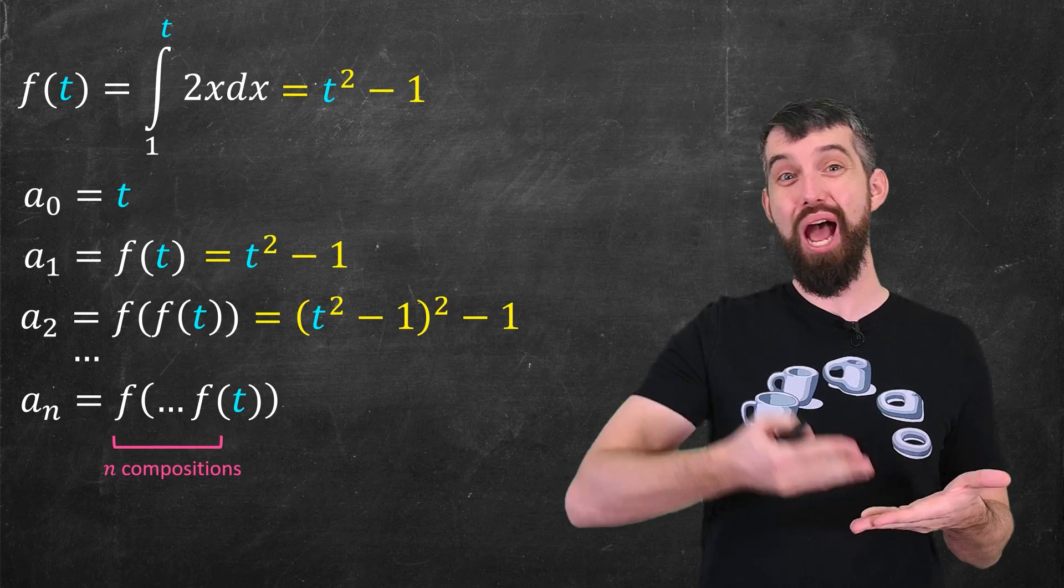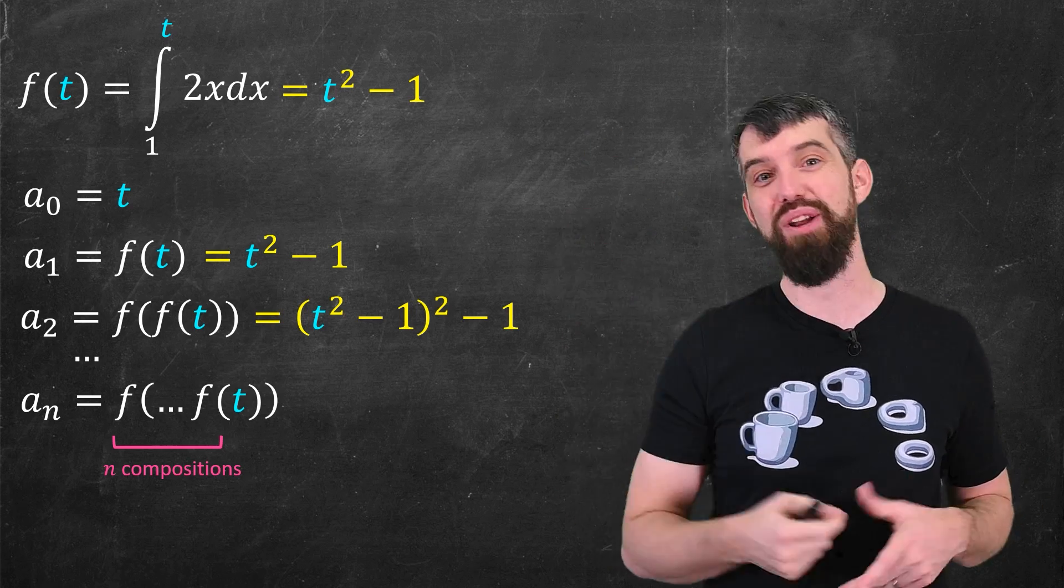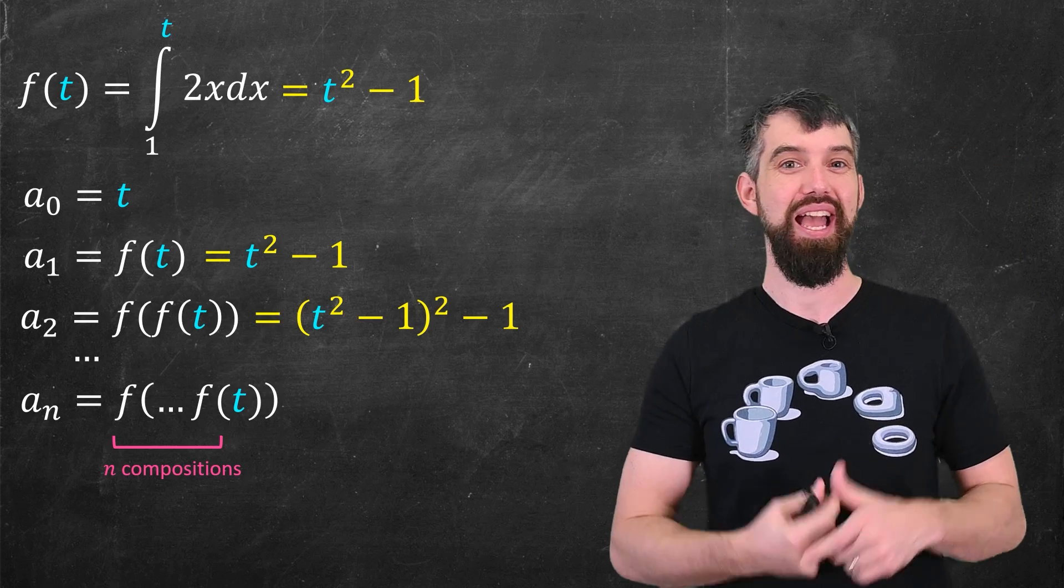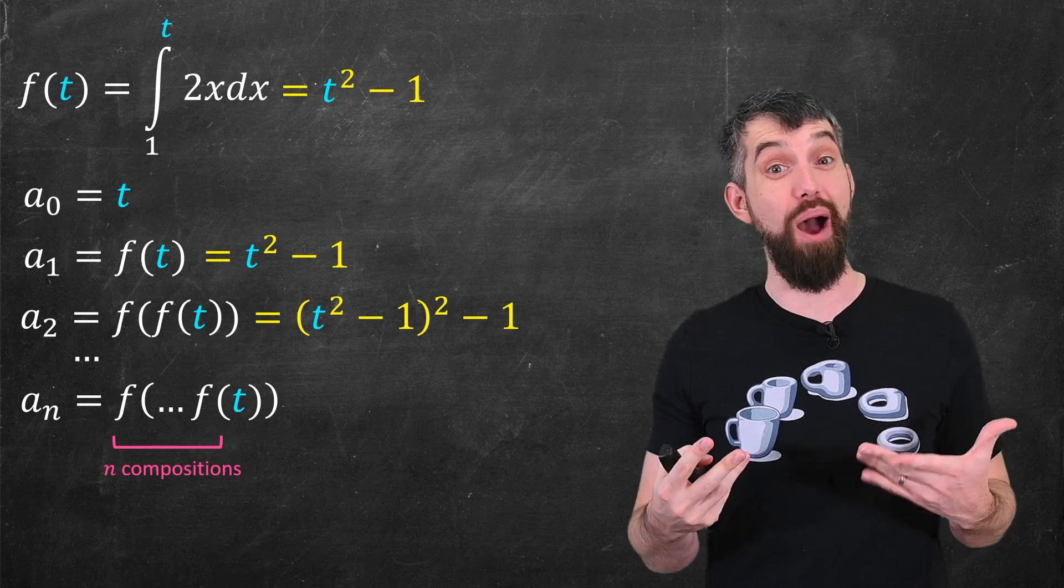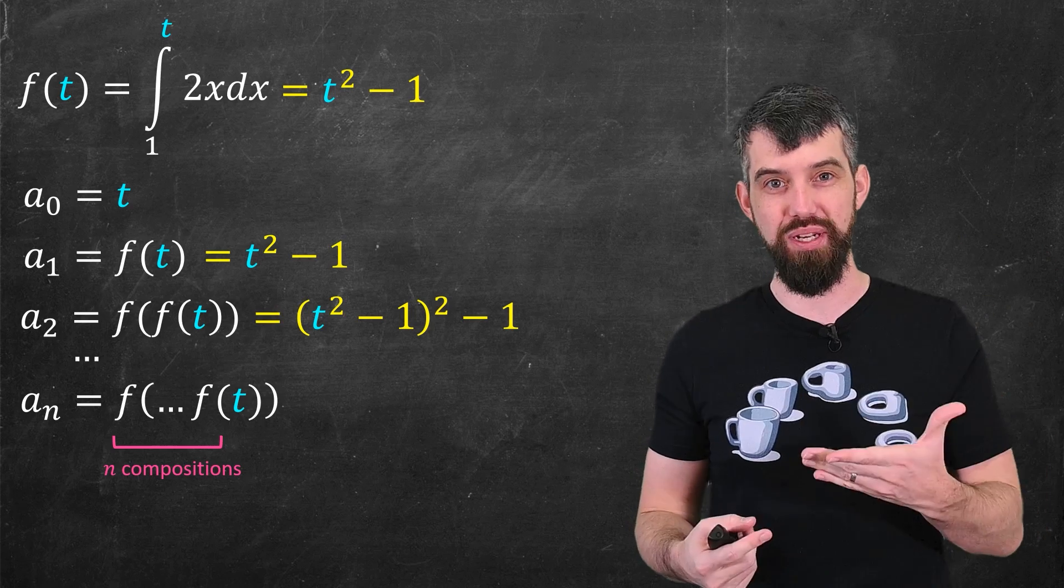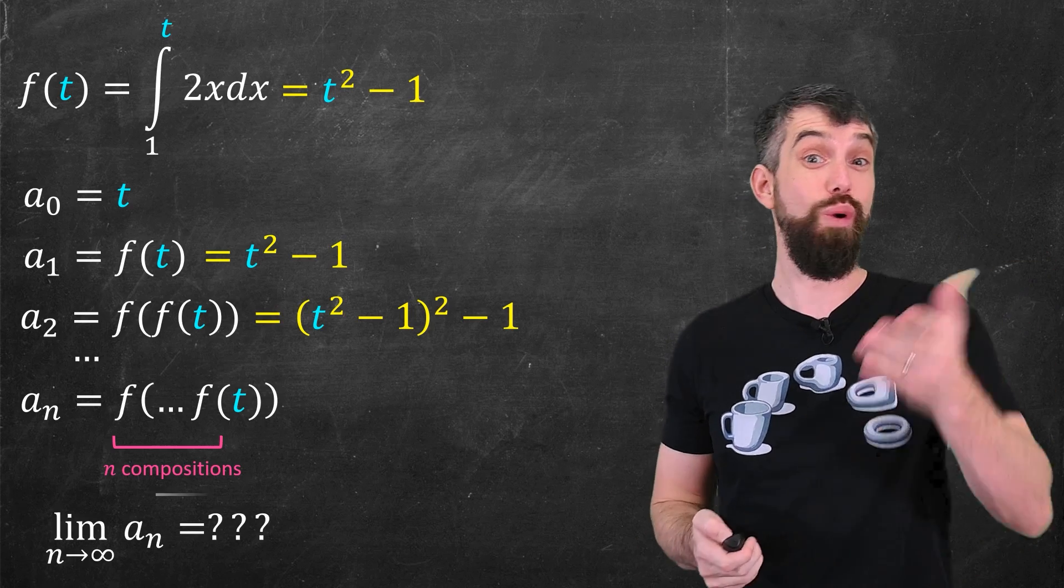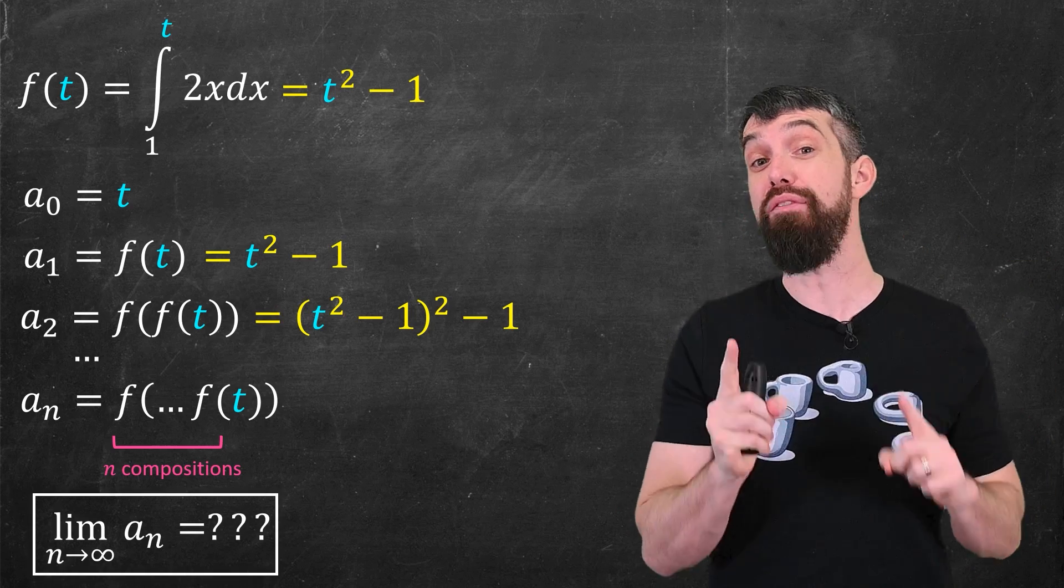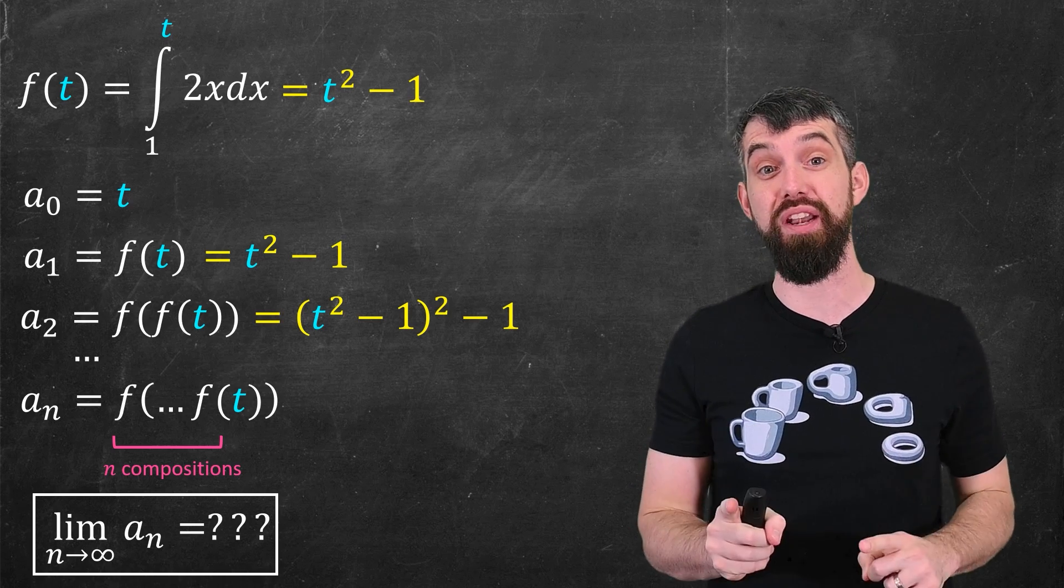This just looks like a tower of integrals, where there's n different integral signs, and the top one's going to have a t, and each one is going to be raised to the power of the previous term in the sequence. So now that I have a sequence, I can pose the question, what is the limit of that sequence? What's the limit as n goes to infinity of the aₙ?